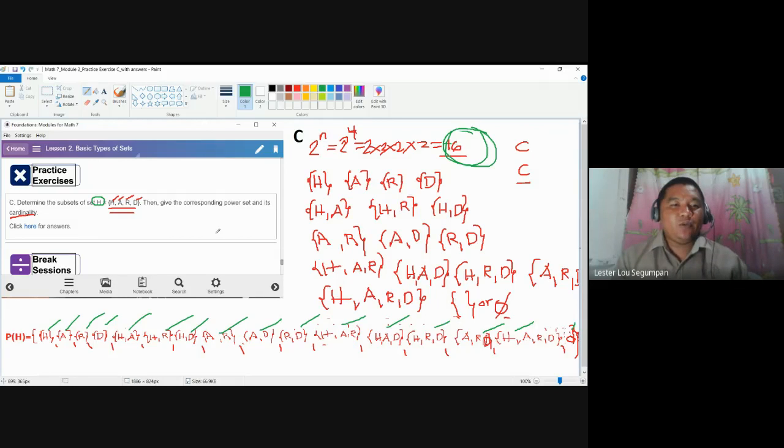So, again, how do we determine the power set? You may start with the cardinality first using this formula. And then, you may proceed to writing unit sets and then increase the numbers until you reach the set itself. And then, simply add the null set. Make sure that equal sets should not be written twice because they are just counted once.